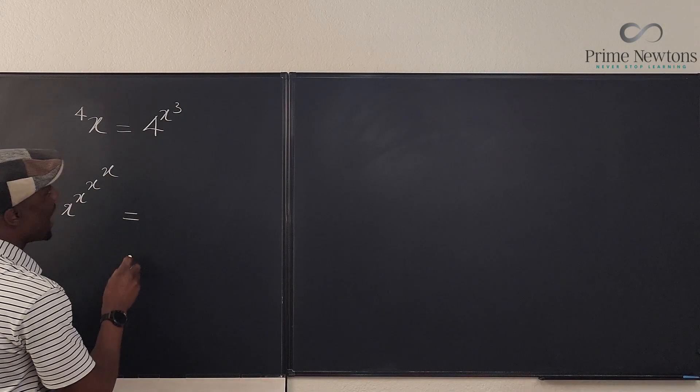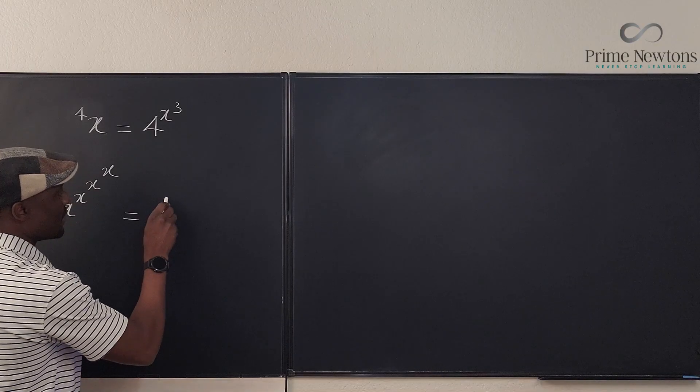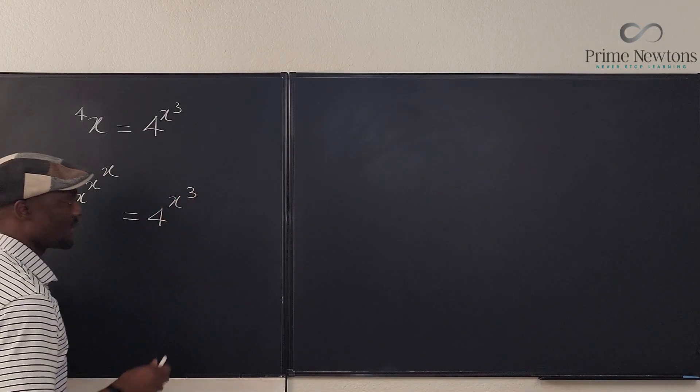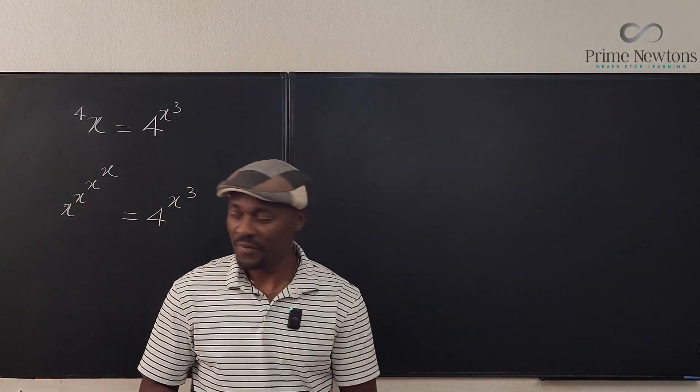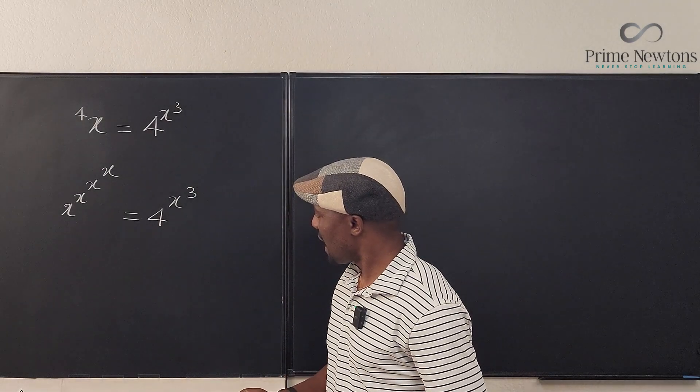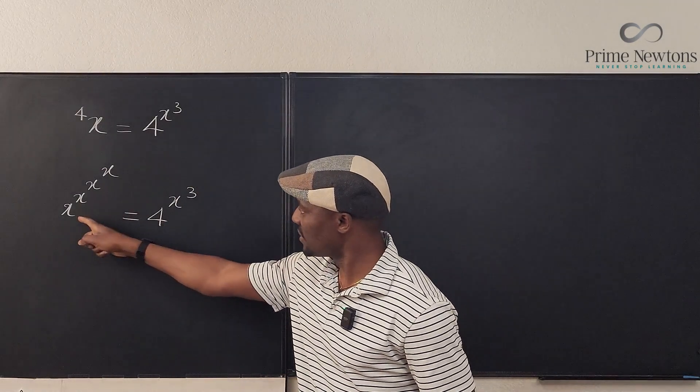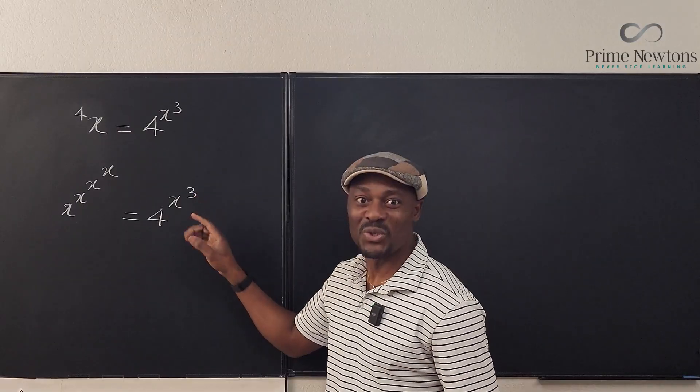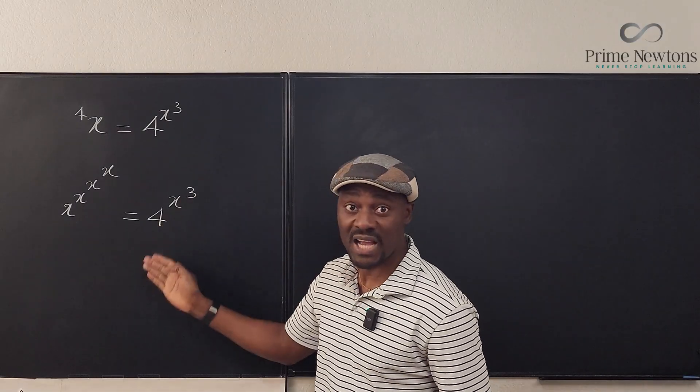And on the right hand side what I have is x cubed. So what do I do here? Well, I can't make this into a tower because this is all x's and this is four, this is three. So definitely I cannot build a tower on the right.